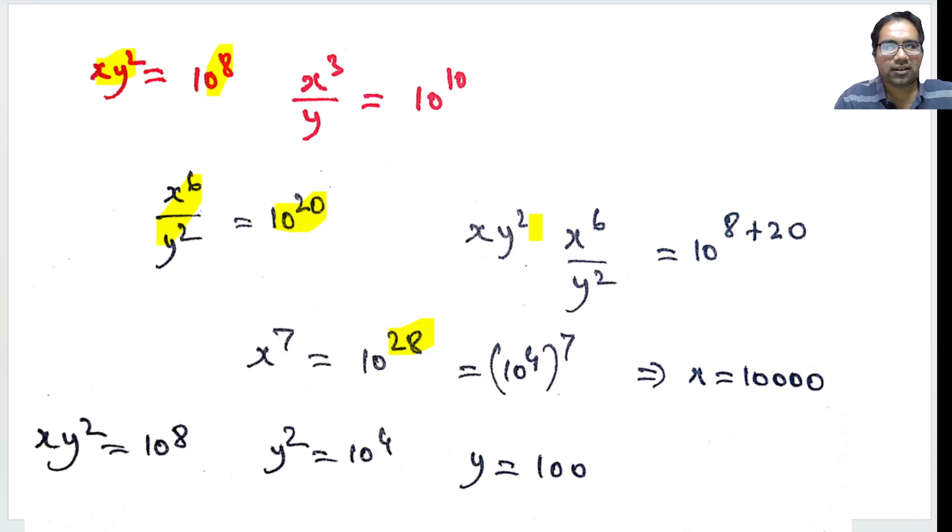This is 10²⁸ and y² and y² will get cancelled, x and x⁶ which becomes x⁷. x⁷ = 10²⁸ which means 10⁴ whole power 7, right, 28 is 4 into 7.